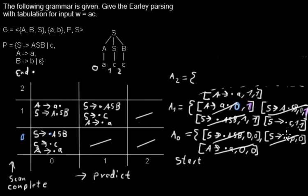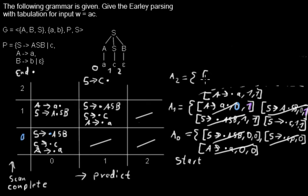Next we have S→.C starting at 1. The dot is in front of a terminal symbol, so we try a scan step. The dot is at position 1 and after position 1 in the input string we have a C — so they match! I move the dot over the C and create a new item in the next cell: S→C. starting at 1 ending at 2, which is exactly the span we need. I throw this item out.